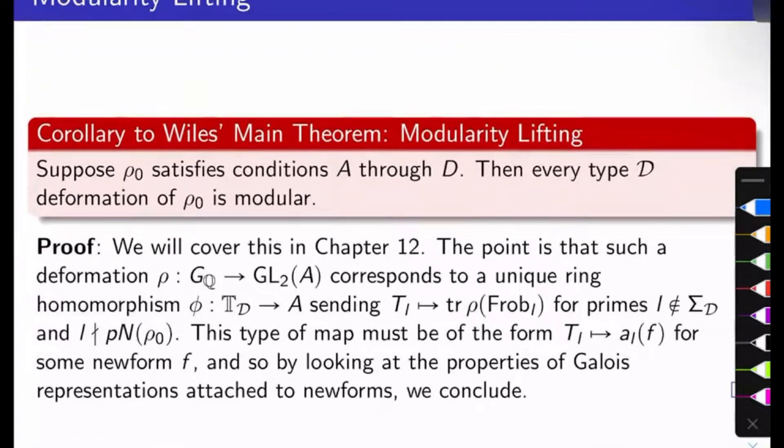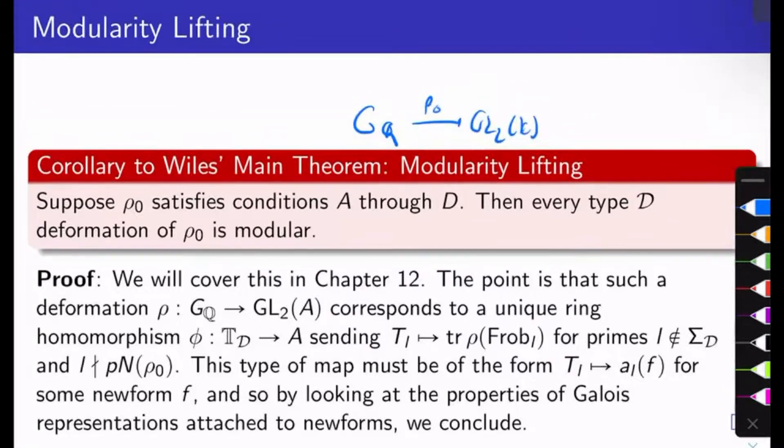Let's talk about the proof of this. Here's what's going on. Take GQ, send it to GL2K via rho-naught. Go ahead and pick yourself some lifting. Let's call it rho to GL2 of A. We claim rho is modular. The point, though, is that I know that I can lift rho through RD to GL2 of RD. In other words, there's a unique ring homomorphism from RD to A commuting this diagram up here.